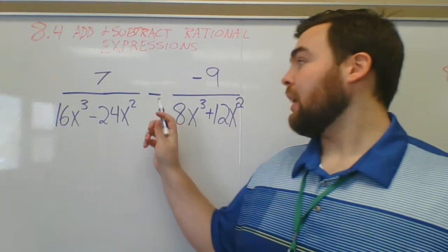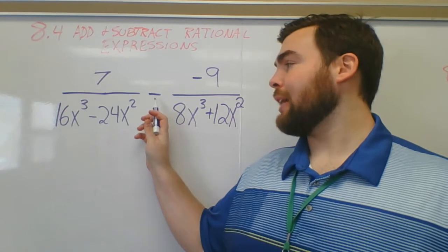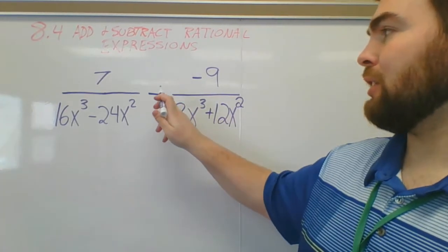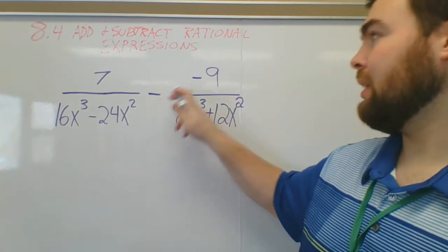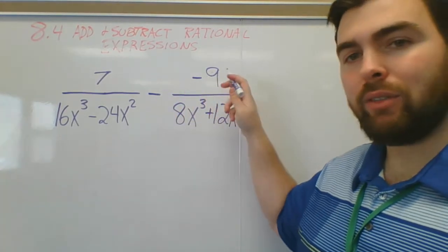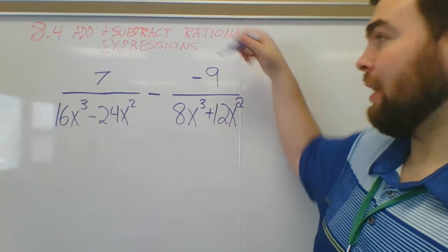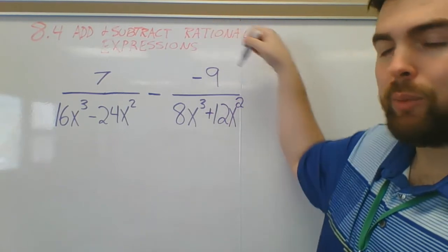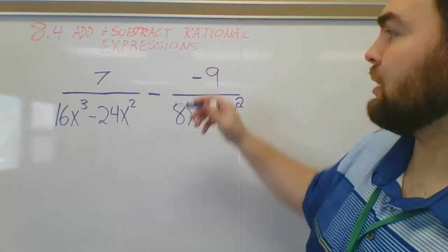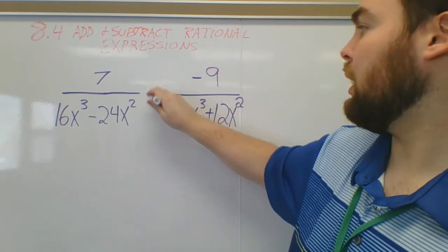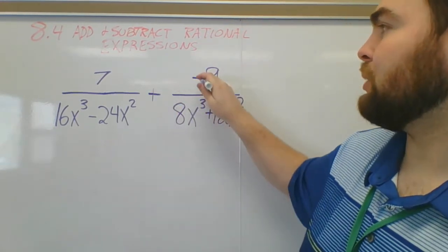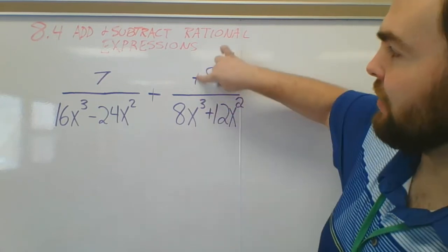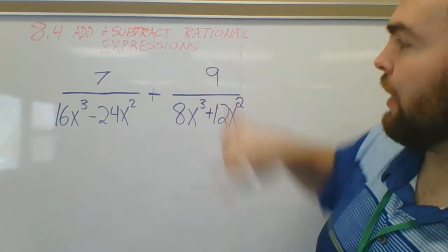First things first: if you ever get a subtraction sign, just know I'm going to change that to plus and then change whatever signs are in the numerator. If there's multiple terms, change multiple signs. So plus, in this case, just becomes positive 9.